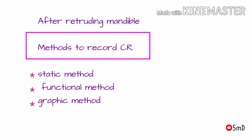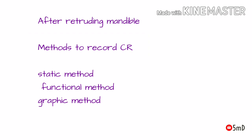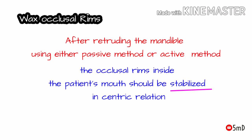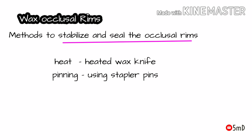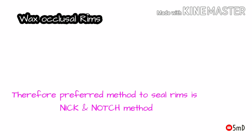Using the active method, the patient receives physical assistance from the dentist to retract the mandible. One of the famous methods is Dawson's bimanual manipulation. After retreating the mandible, either a static method, functional method, or graphic method is used to record CR. The static method includes either the use of wax occlusal rims or inter-occlusal check records. The wax occlusal rim is the most commonly used method. After retreating the mandible with occlusal rims inside the oral cavity, the rims have to be stabilized in centric relation — the preferred method being the nick and notch method.